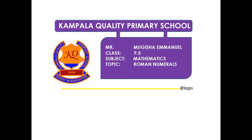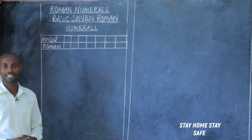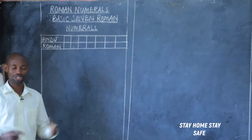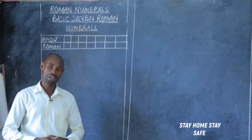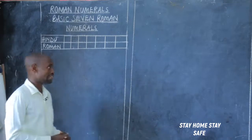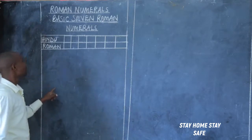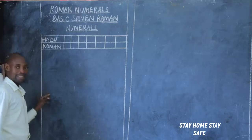Roman numerals is a lesson that was introduced to you in P4, actually even in P3. So I hope when I talk about Roman numerals, this is not a new concept. When we talk about Roman numerals, this is a way of writing numbers using letters that originated from the Latin alphabet. Latin alphabet is different from the English alphabetical order that we use. That's why, when we are writing some numbers in Roman numerals, there are some letters which we don't use. So in order for you to master how to write numbers in Roman numerals, you must be well acquainted with the seven basic Roman numerals.